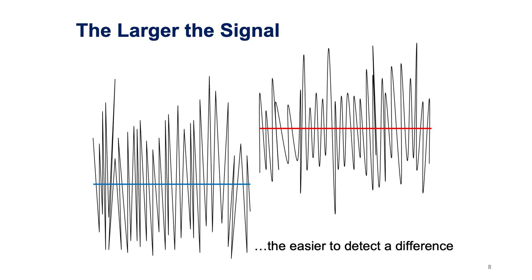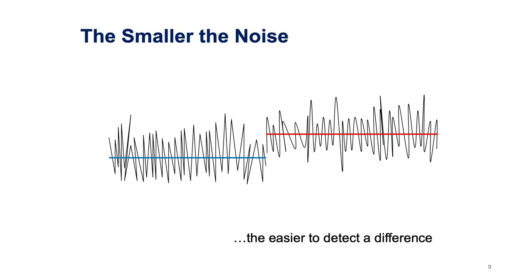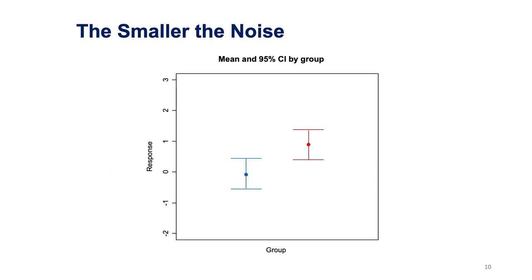Therefore, it's important to get enough sample size so that you are able to convincingly detect the signal from the noise. The larger the signal, the easier it is to detect a difference. So the larger the signal, the fewer patients you require for your study because you're looking for a bigger difference. The smaller the noise — the smaller the variation — the easier it is to detect the difference. So if the variation in the outcome is small, you'll require a smaller number of patients for your study.